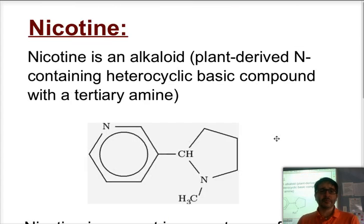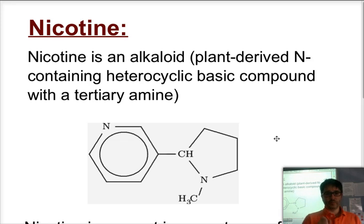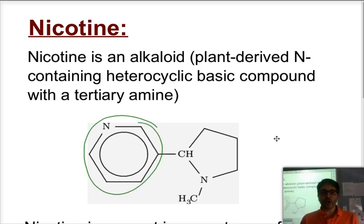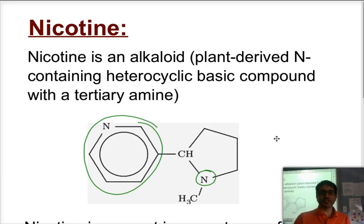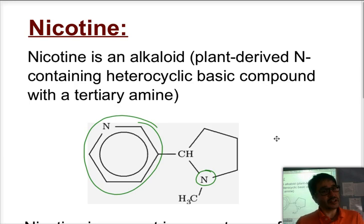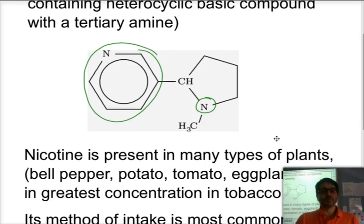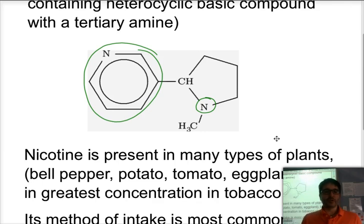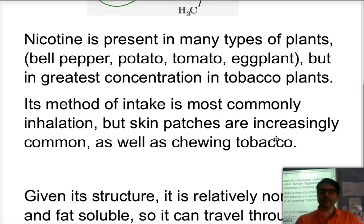A second type of stimulant is nicotine, and nicotine is an alkaloid — a plant-derived base that contains a heterocycle and a tertiary amine. We can see a heterocycle with five carbons and a nitrogen, and a tertiary amine where the nitrogen is connected directly to three different carbon atoms. It is taken from the tobacco plant, but is also present in small amounts in the leaves of the pepper plant, tomato plants, potato, eggplant, and others. Tobacco has it in the greatest concentration, which is why tobacco is used to make cigarettes. The most common method of intake is inhalation, but people also take nicotine through patches or chewing tobacco.